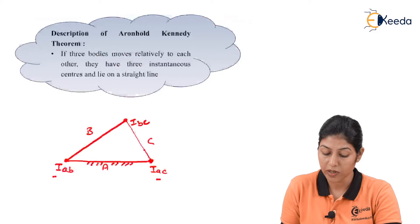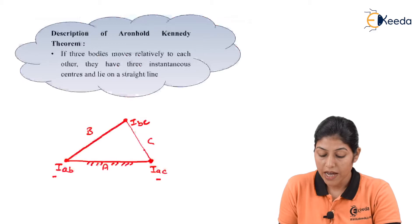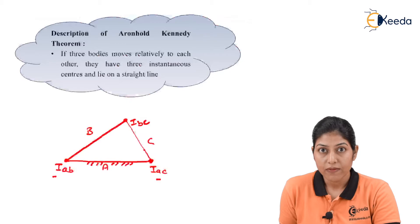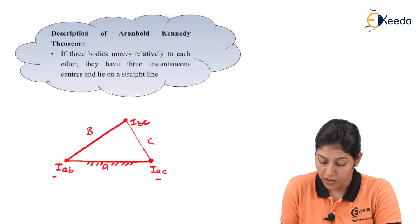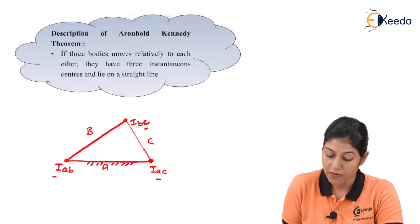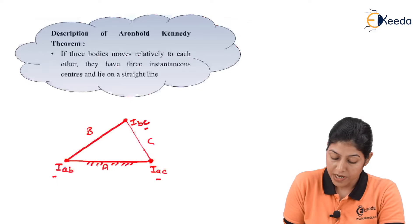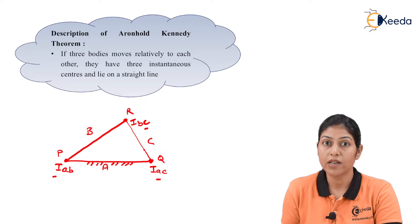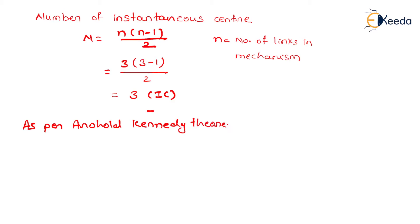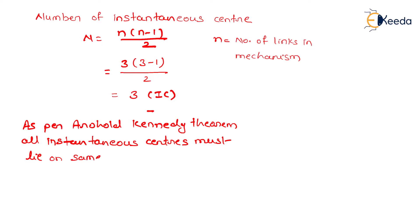Whatever instantaneous centers we define for these three links, all of them will lie on the same line. IAB and IAC lie on the same line, so the third instantaneous center IBC must also lie on this line. Let us define this as line PQ. All instantaneous centers — IAB, IBC, and IAC — must lie on line PQ as per the Arnold-Kennedy theorem.